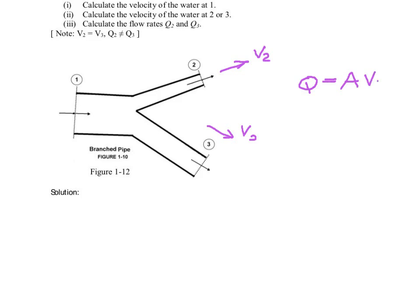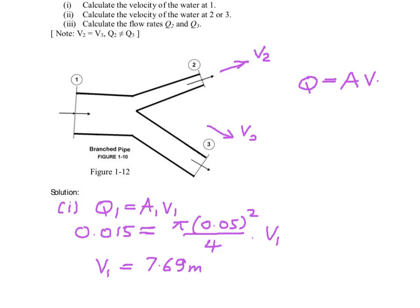If you look at part 1 now, Q1 is equal to A1 times V1. We know Q, the volumetric flow rate, is 0.015 liters per second, so we have to change it to cubic meters per second, equal to the area at point 1, which is π times 0.05 squared over 4, multiplied by our unknown V1. If we bring all the known figures to one side and evaluate, you will get V1 equal to 7.69 meters per second.